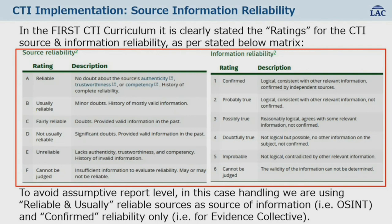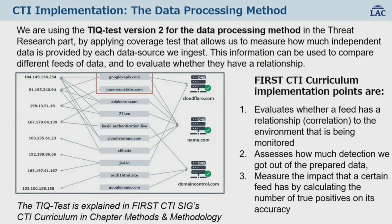The third takeout is source information reliability. The FIRST CTI curriculum clearly states ratings for CTI source and information reliability. We use reliable and usually reliable sources as the source of information, and confirmed reliability only for evidence collection. The fourth takeout is data processing — we use the TIКТEST version two method for data processing in this threat research. This information is used to compare different feeds of data and evaluate whether they have a relationship.